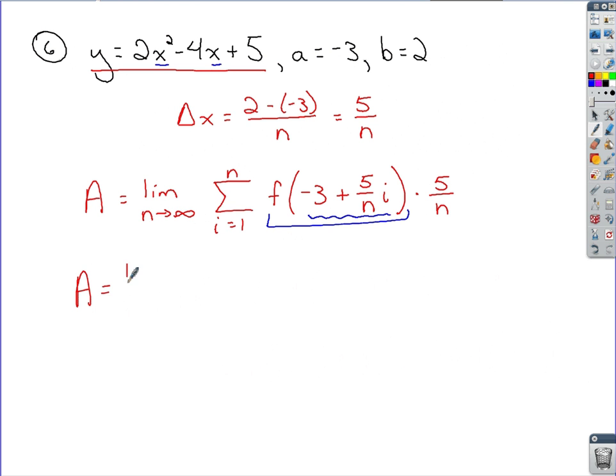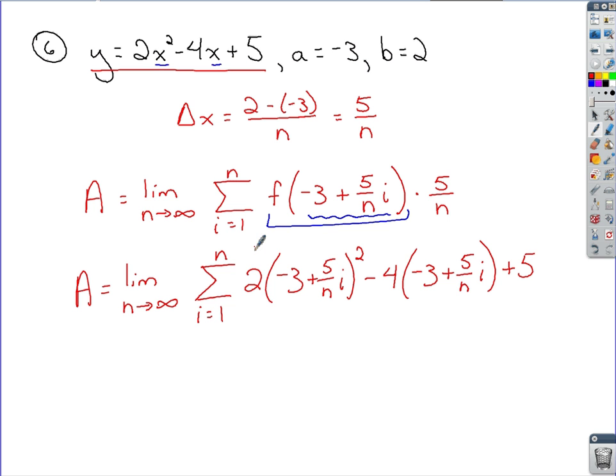When we do that, you have 2 times negative 3 plus 5 over n i quantity squared, minus 4 times the same thing, plus 5 because that completes the function. And then we have to multiply the whole thing by 5 over n. All of this represents that expression plugged into the function, tack on the 5 over n at the end.